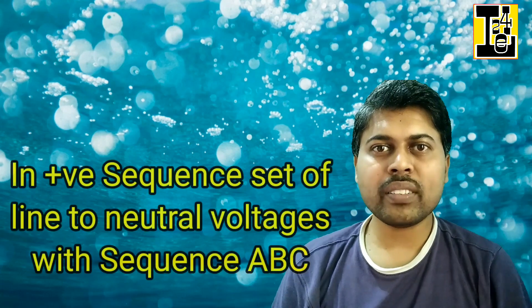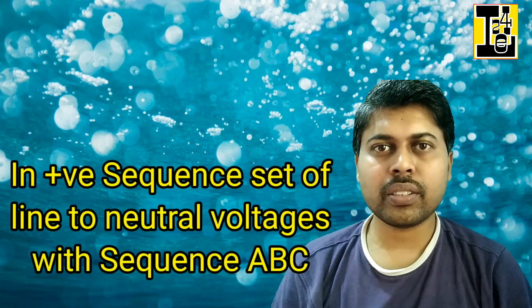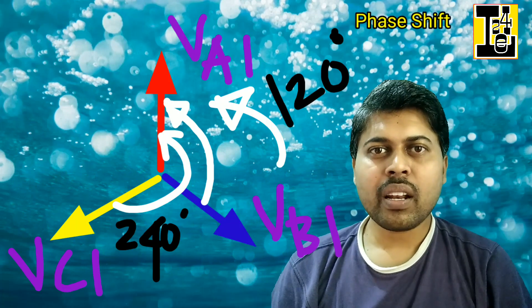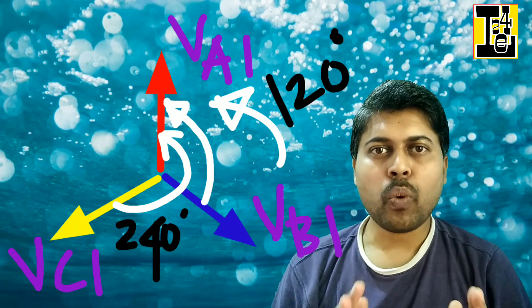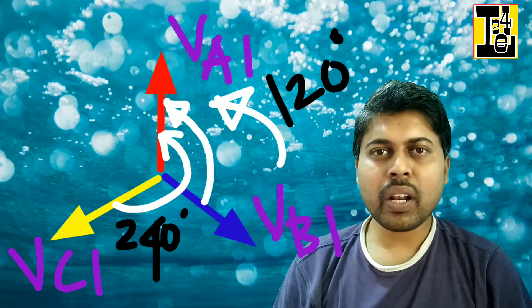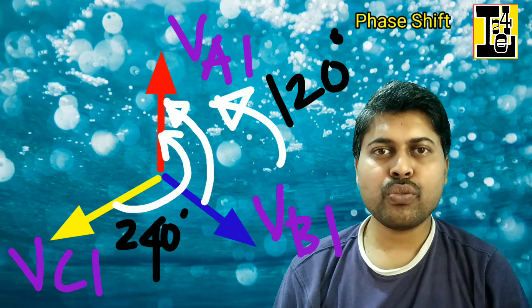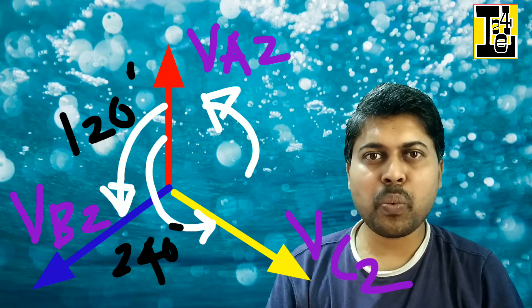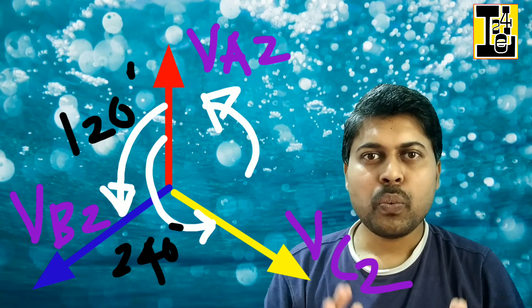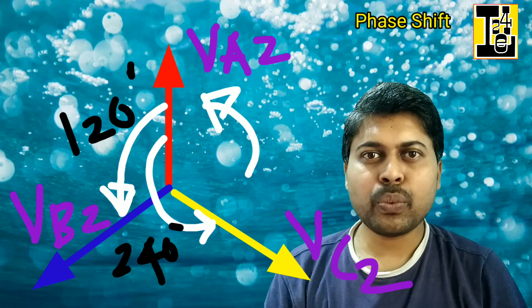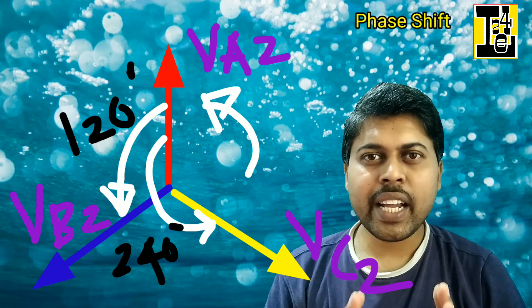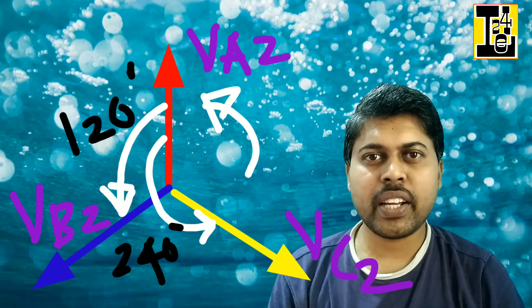In the positive sequence set of line-to-neutral voltages with phase sequence ABC: VB1 lags VA1 by 120 degrees, and VC1 lags VA1 by 240 degrees. In the negative sequence set of line-to-neutral voltages with phase sequence ACB: VB2 leads VA2 by 120 degrees, and VC2 leads VA2 by 240 degrees.